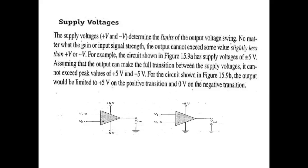If the difference between the non-inverting and inverting inputs makes the output positive, then the maximum output will be positive. If the supply voltage is 5V, then the maximum output will be positive, but it will not quite reach 5V. If we talk about negative supply, then the output voltage will tell us the negative limit.